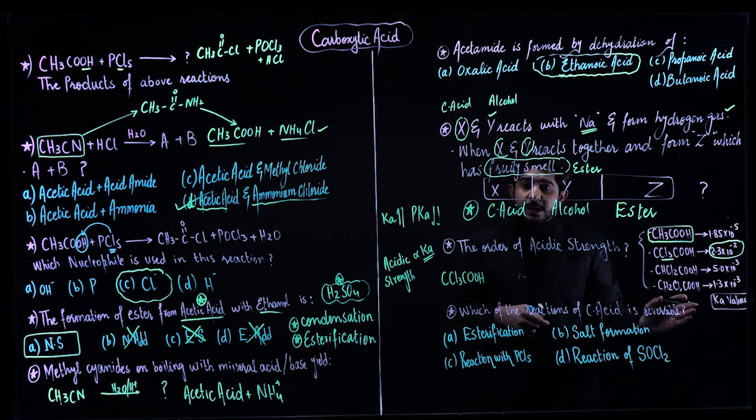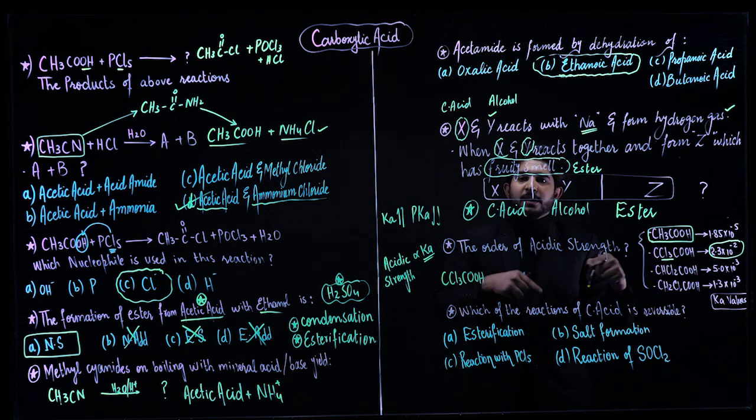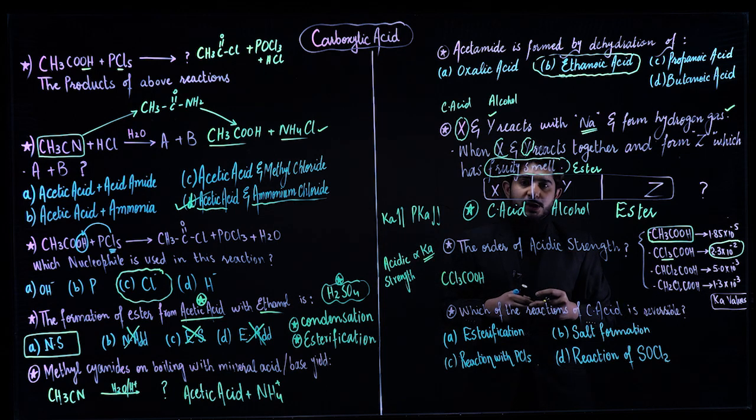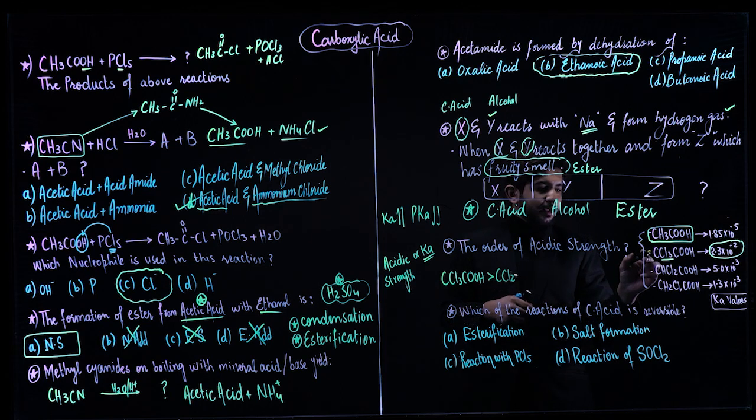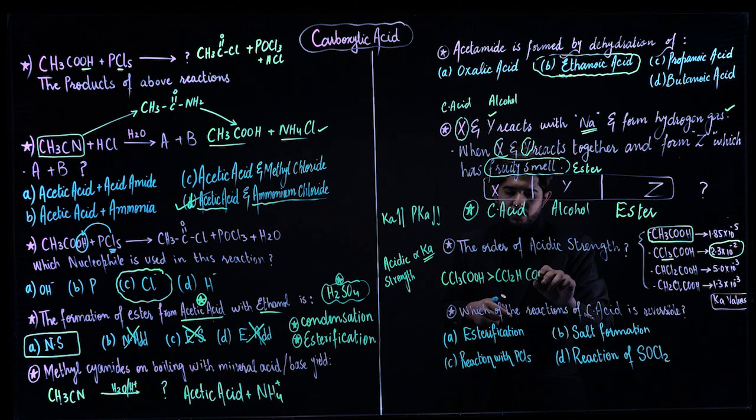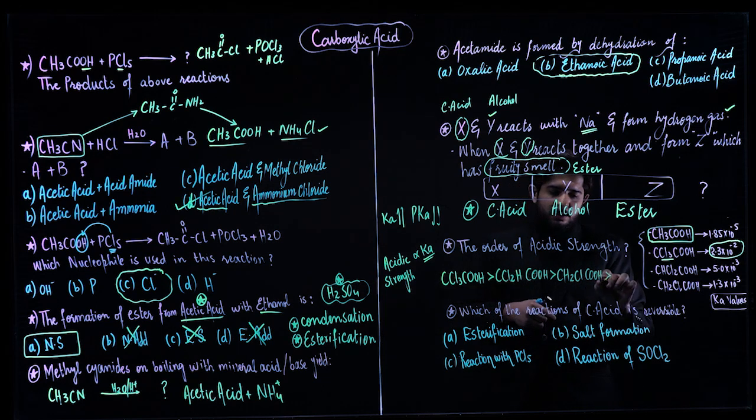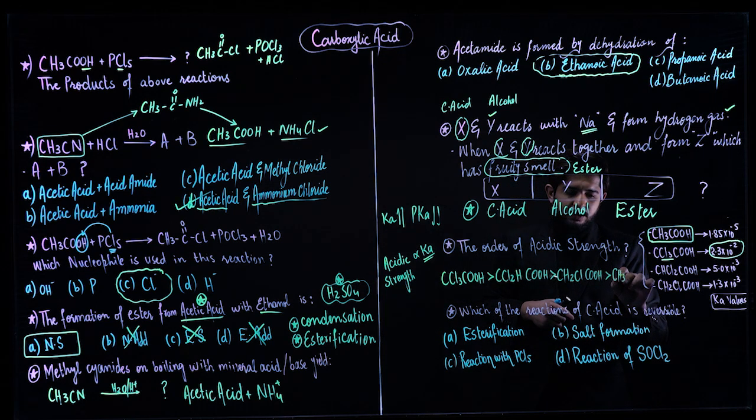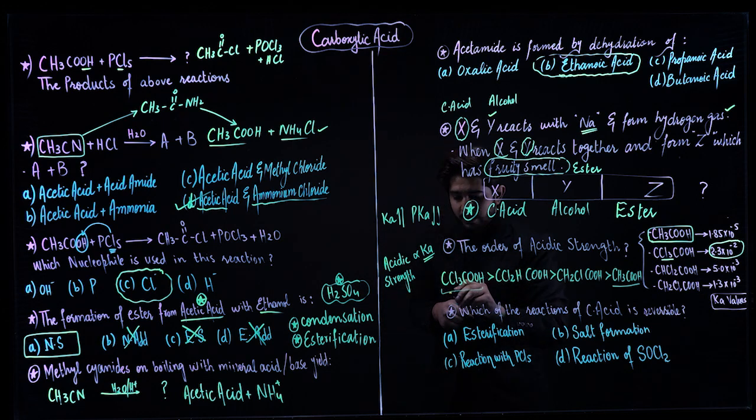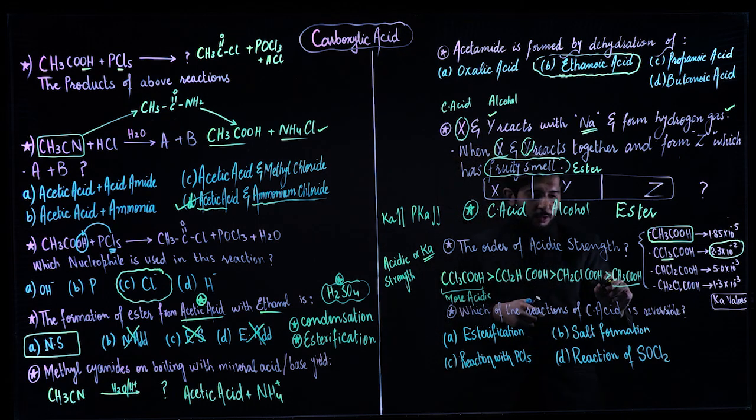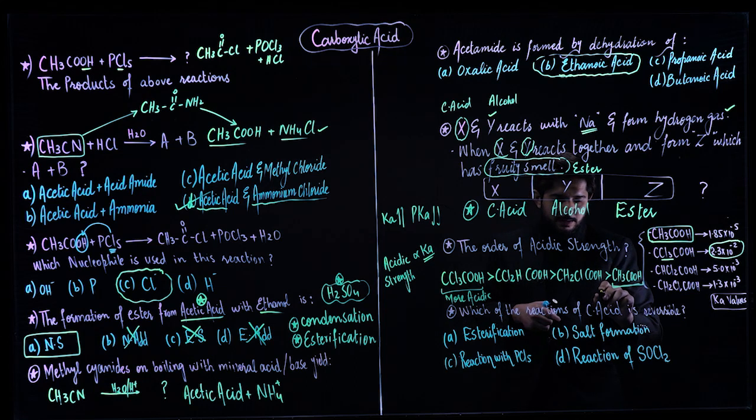Here CCl3, the more Cl replaced, the greater the strength. CCl3 has the highest strength. Although you can also use the Ka values concept, if values are not given and you're just given these compounds, remember: the more Cl substituted with hydrogen, the greater the acidity. After that CCl2 with one H, then CH2Cl, then CH3 has the least acidity. CCl3 is more acidic, CH3 is less acidic.